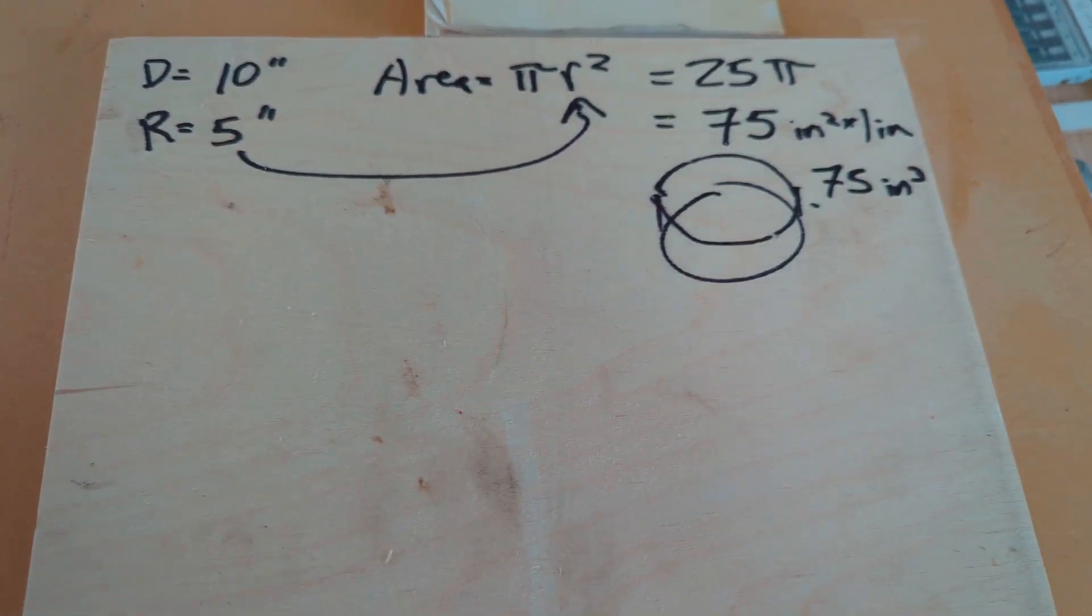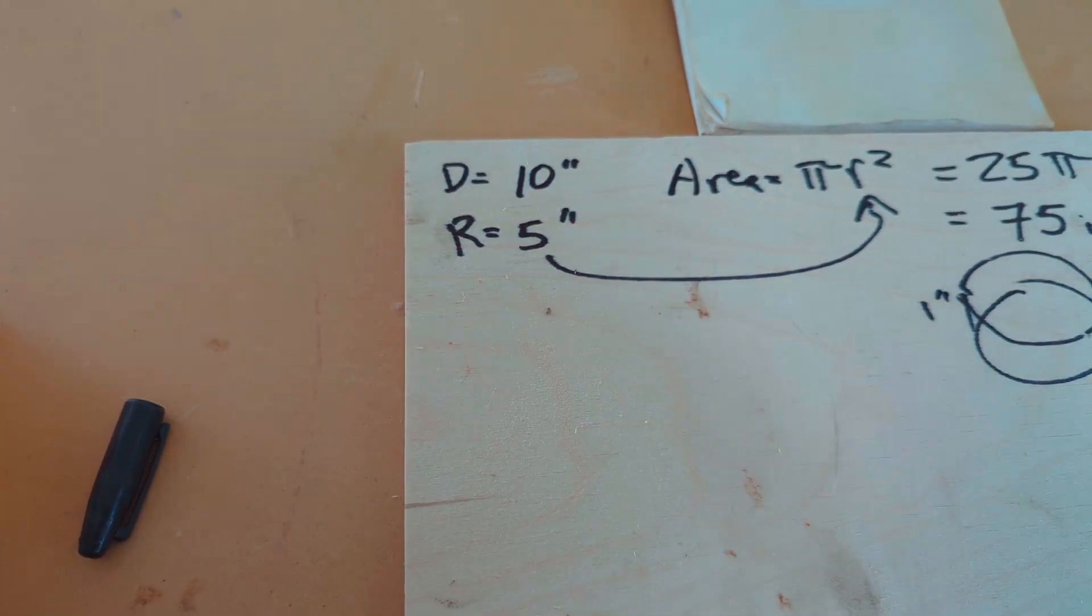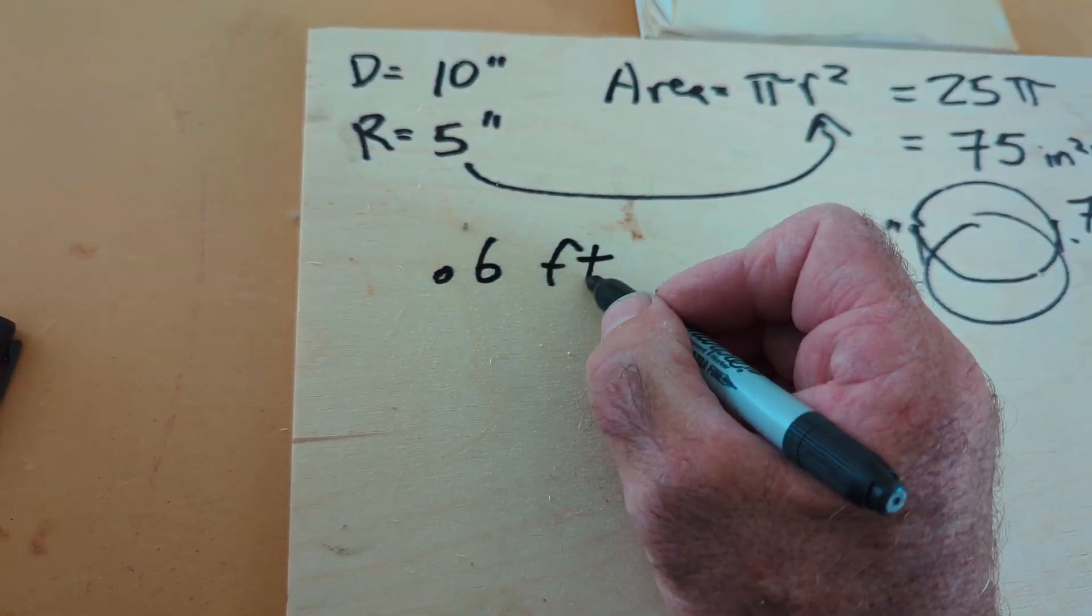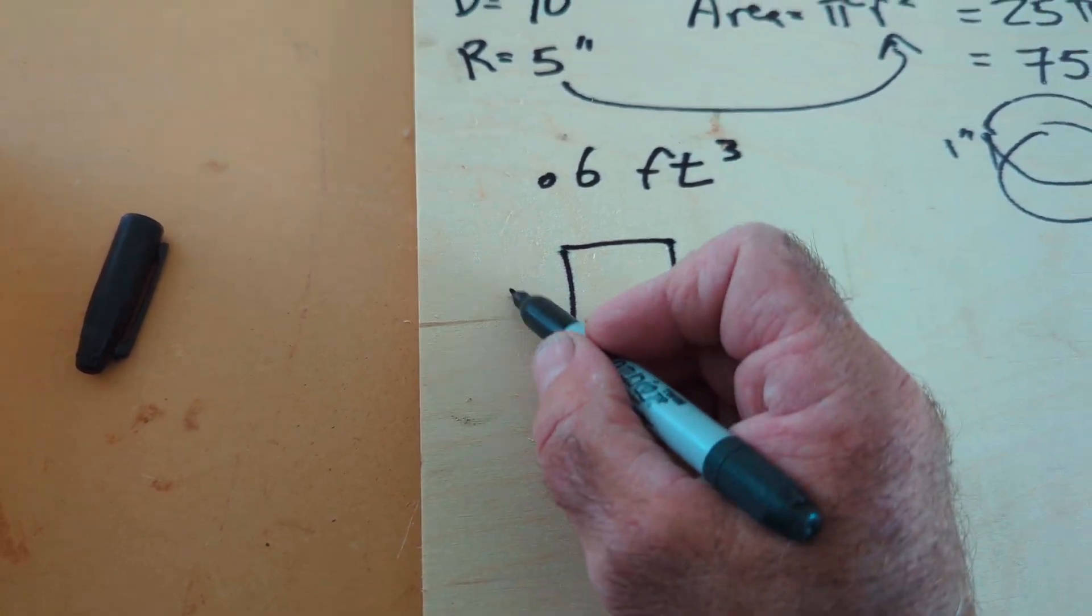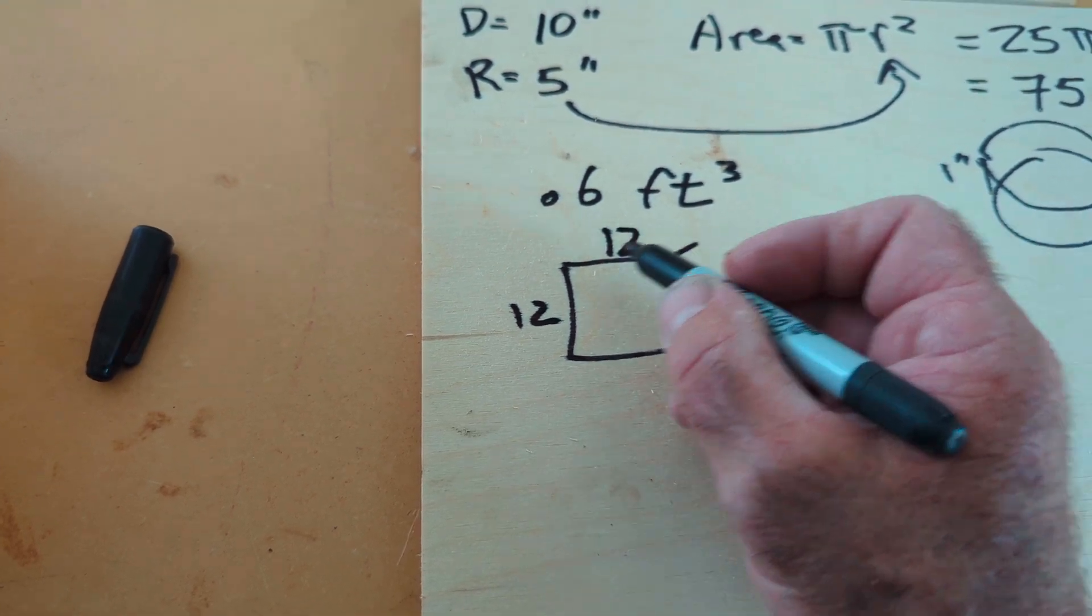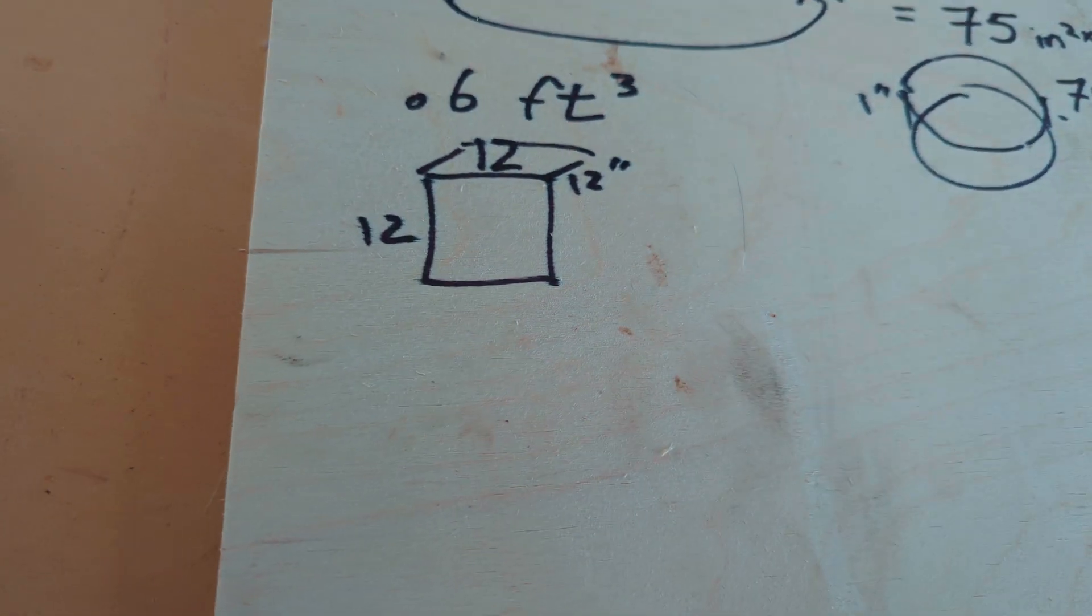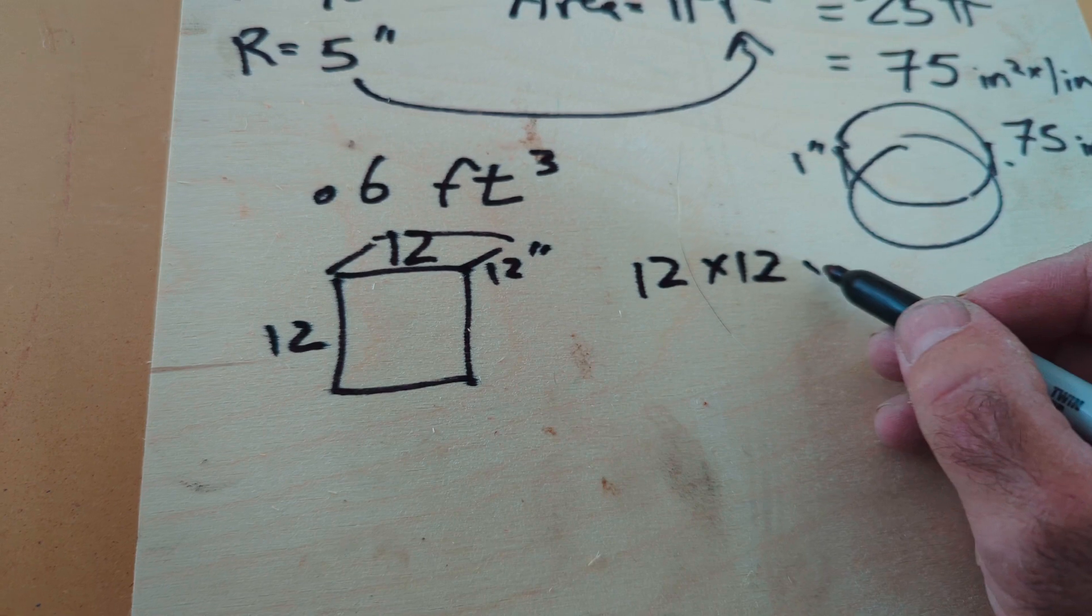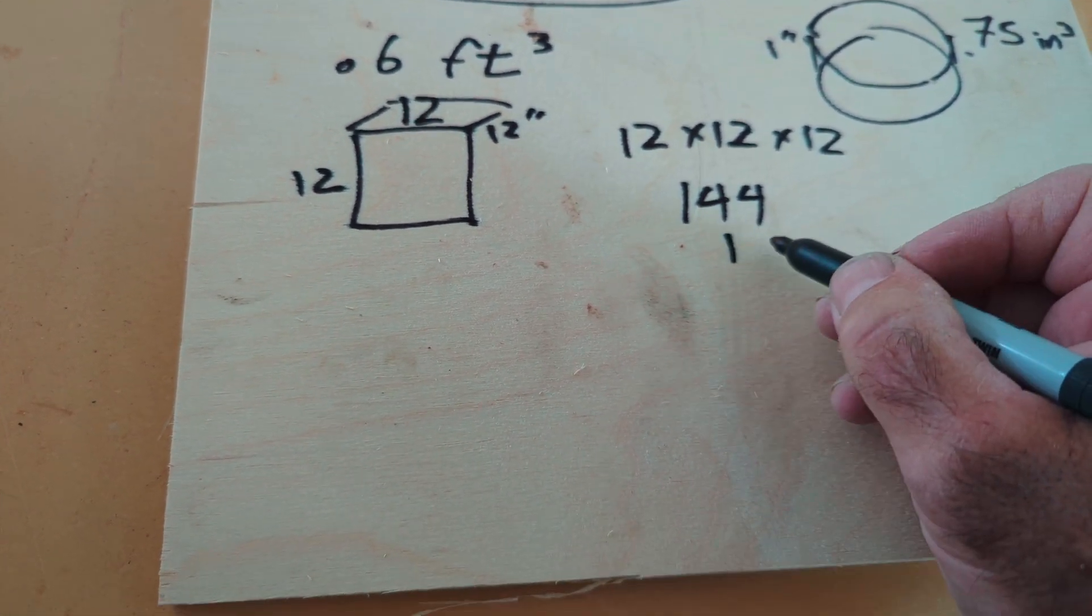So 75 cubic inches per inch, right? 1 inch tall. Let's go back to that concrete. Bag of concrete is 0.6 cubic feet. Well, a cubic foot is 1 foot 12 by 1 foot 12 by a depth of 12, right? So we got 12 times 12 times 12. So it's 144 times 12.